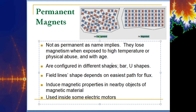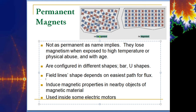Magnets can be in different configurations — a bar shape or a U shape. The field line shape depends on the easiest path for flux, kind of like current always trying to find the least resistance to get to ground. Magnets also induce magnetic properties in nearby objects of magnetic material. These are used inside motors because of the repellent and attractive forces.